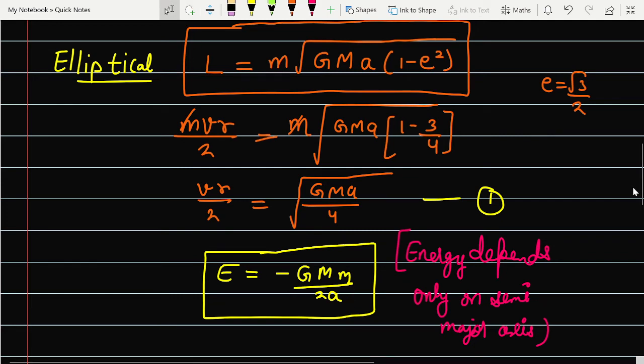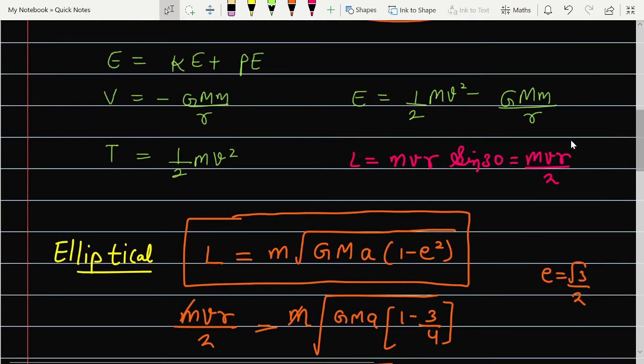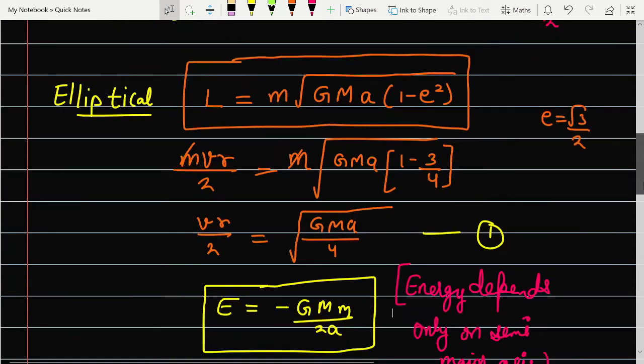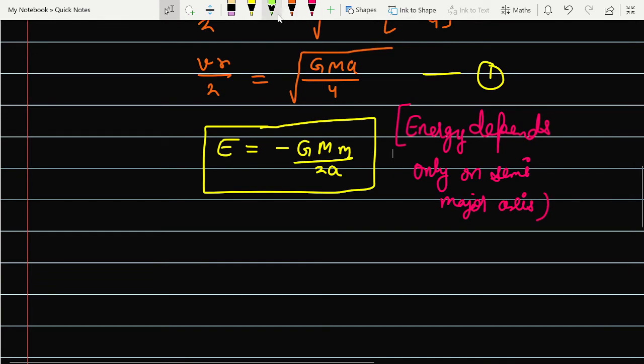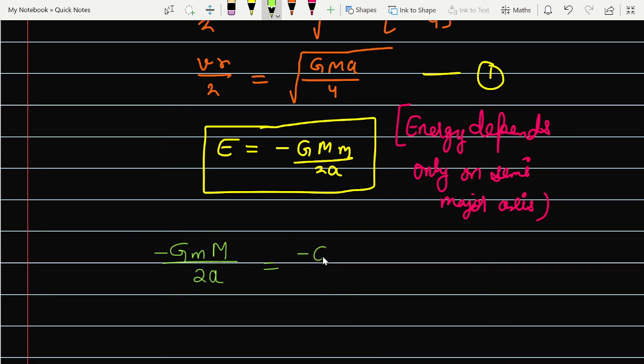And you know the total energy was equal to half mv square minus GMm upon r. So here we will put values. It is going to be minus GMm upon 2a equals minus GMm upon r plus half mv square.